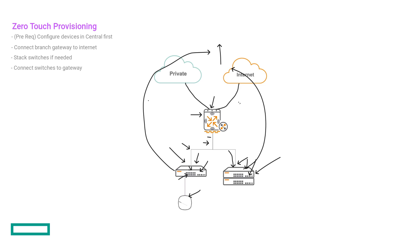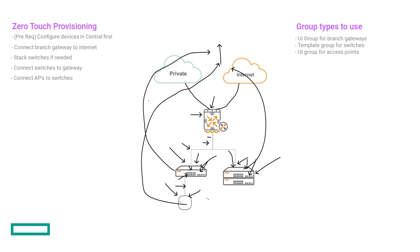In that template configuration, you need to identify all your VSF members — so if you have two-member stacks, three-member stacks, etc., in that template configuration you need to specify VSF member 1, 2, 3, for whatever number of members are in the stack. And then finally we have the AP. The AP is going to have that management VLAN passed down to it, it'll reach out to Central, grab its configuration, and then it's done. For your AP you want to use a UI group within Aruba Central. So the switches are template group, APs are UI group, and your gateways are also UI group. All of this is detailed in the VSG deployment guide — you'll see UI groups for gateways, UI groups for APs, and template groups for the switches.